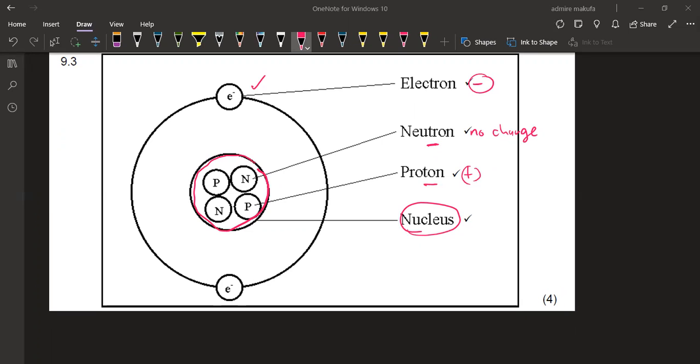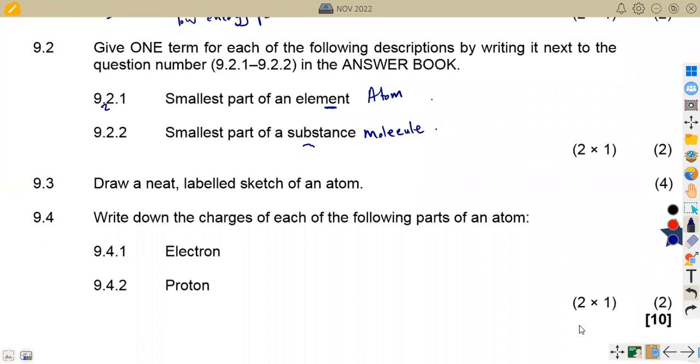Let's check the other part of the question. That is on question 9.4. Write down the charges of each of the following parts of an atom, electron. We talked about this. We said electron is negatively charged. So this is a negative. Then the proton, we talked about this also. This is positive. So sometimes they can even have neutron in this case. So if it is neutron, then we've got no charge for this one. There's no charge or it's just a neutron.